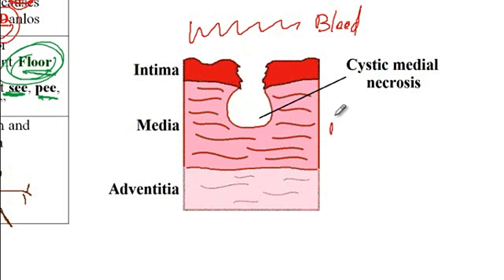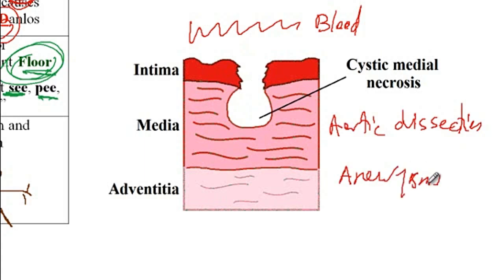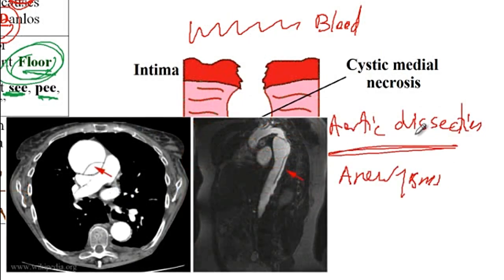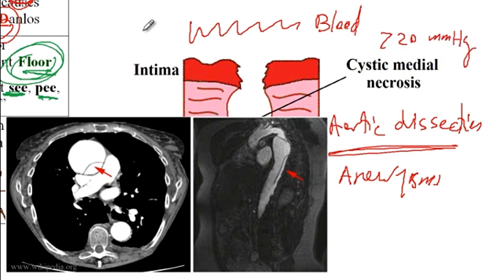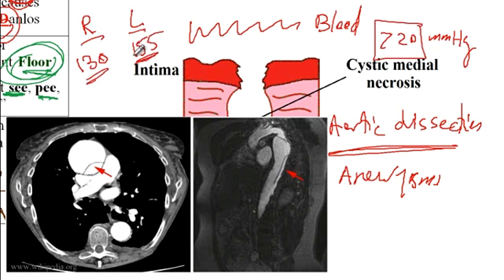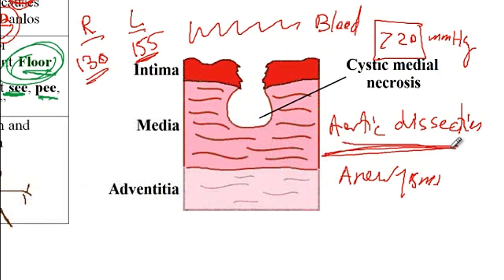After cystic medial necrosis, these patients are prone to aortic dissection and aortic aneurysms. Patients with aortic dissection develop tearing back pain. When you measure blood pressure, the systolic blood pressure in the right versus the left arm will show more than 20 mmHg difference between the two arms — for example, 130 in the right arm versus 155 in the left arm.